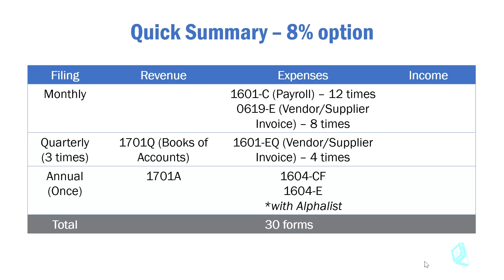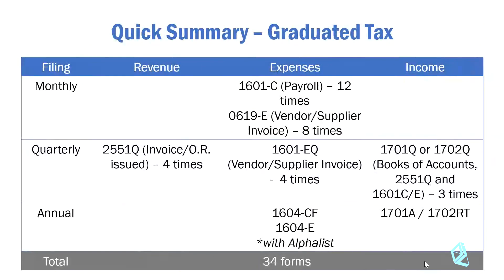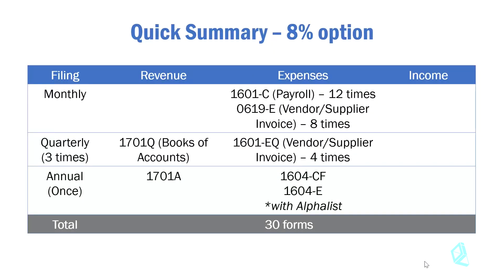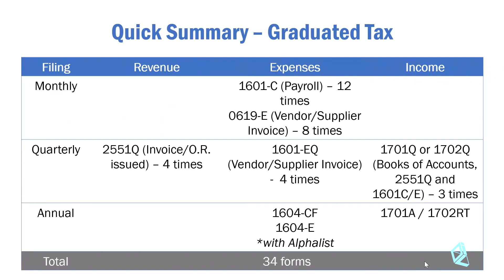For the eight percent option, the monthly filings related to expenses are very similar to the previous slide. For revenue, however, you have Forms 1701Q and 1701A — and unlike before, these are listed under revenue rather than income because the eight percent is based on gross revenues. There is no longer a line item for percentage taxes or Form 2551Q. If you are VAT-registered, it would be a different story — you can check the easy reference included in this course to see how to file your VAT tax returns.